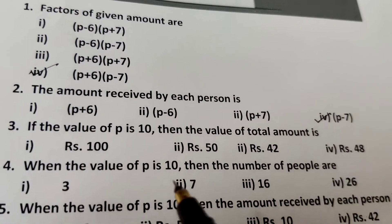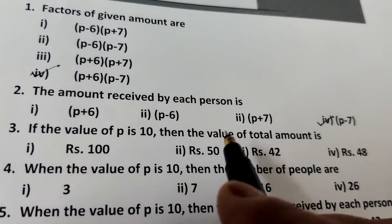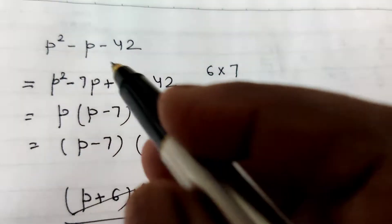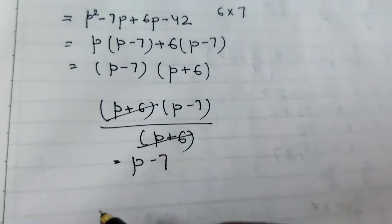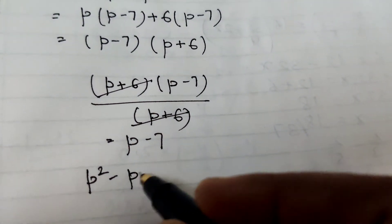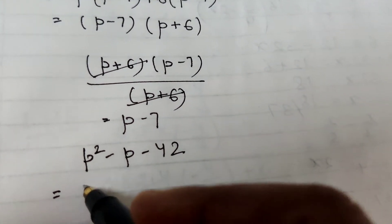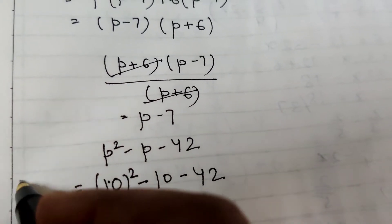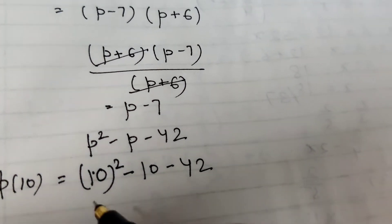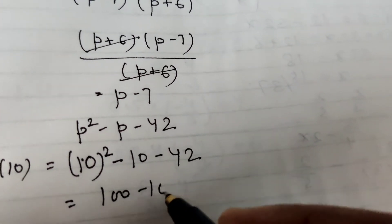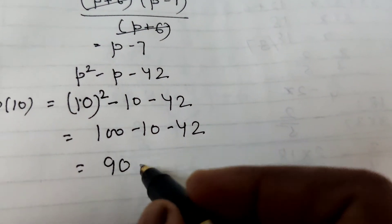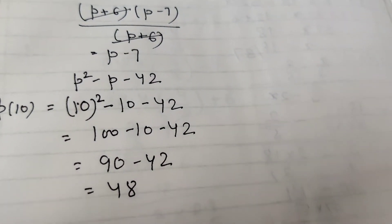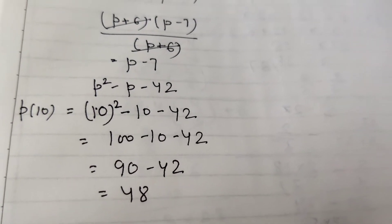Question 3: If the value of p is 10, find the total amount. We substitute p equals 10 into p squared minus p minus 42. That gives 100 minus 10 minus 42, which equals 90 minus 42, which equals 48. So when p equals 10, the total amount is rupees 48.